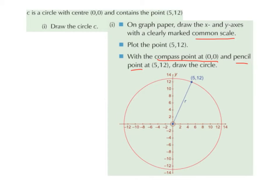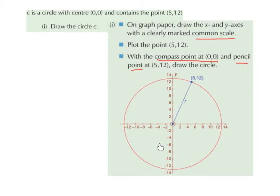A good way to check if you've drawn your circle correctly is to take a ruler and measure the distance from the origin to the point (5, 12), and check that the same distance holds on the other side from the origin. If you were to draw in another radius forming a diameter, both should be the exact same length and both touching the edge of the circle.